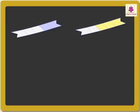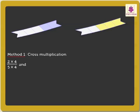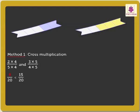One method for comparing such fractions is by cross multiplication of numerators and denominators. Thus we get two multiplied by four upon five multiplied by four, and three multiplied by five. On cross multiplying, we get the answers as eight upon twenty and fifteen upon twenty.